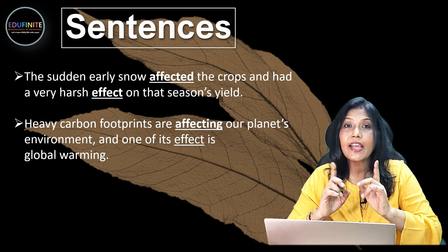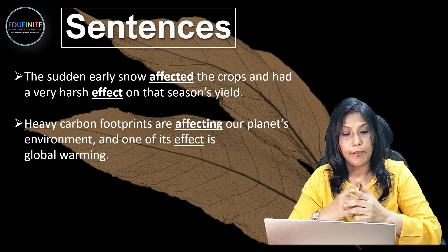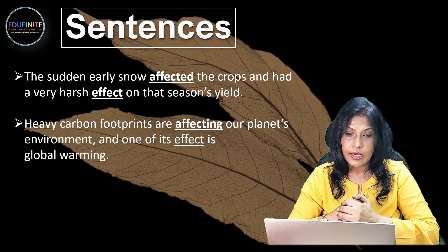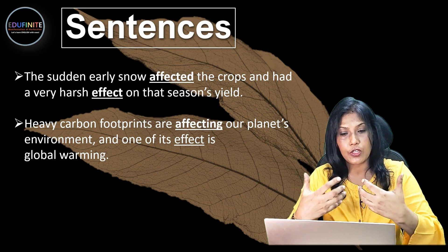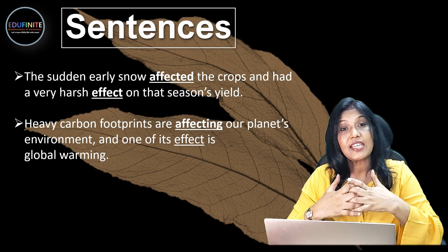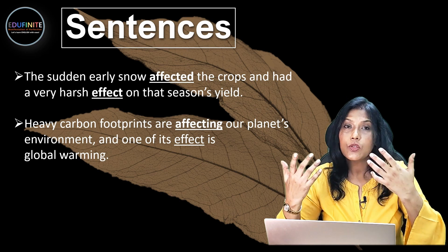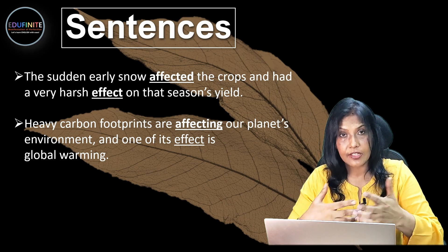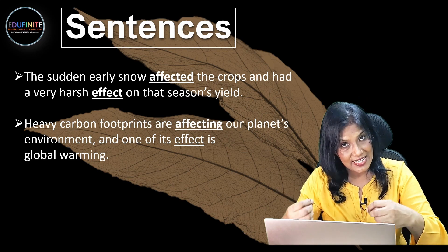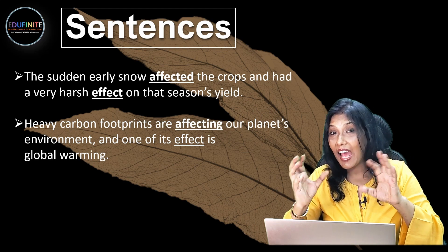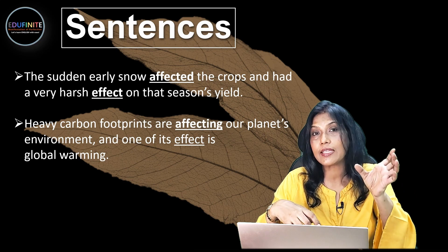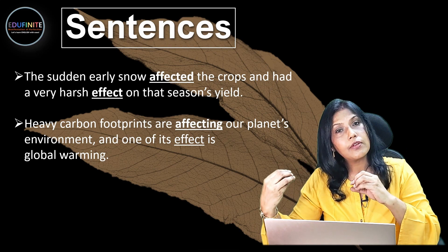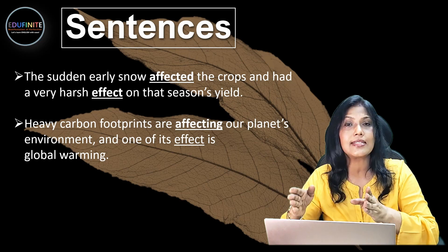'Heavy carbon footprints are AFFECTING our planet's environment, and one of its EFFECTs is global warming.' Carbon footprint is causing damage to our planet's environment, so it's affecting our planet's environment — since it's a verb, we add -ing. As a result, the effect, the result, is global warming. When the action is taking place, it's AFFECT; when some result has occurred because of that action, that result is the EFFECT.